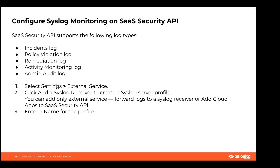Configuring syslog monitoring on SaaS Security API: SaaS Security API supports the following log types — incident log, policy violation log, remediation log, activity monitoring log, and admin audit log. You need to go to the Settings page and choose External Service, then click on adding a syslog receiver to create a syslog server profile. Note that you can add only one external service. You can forward logs to a syslog receiver or add cloud apps to SaaS Security API. Then you need to enter a name for the profile.